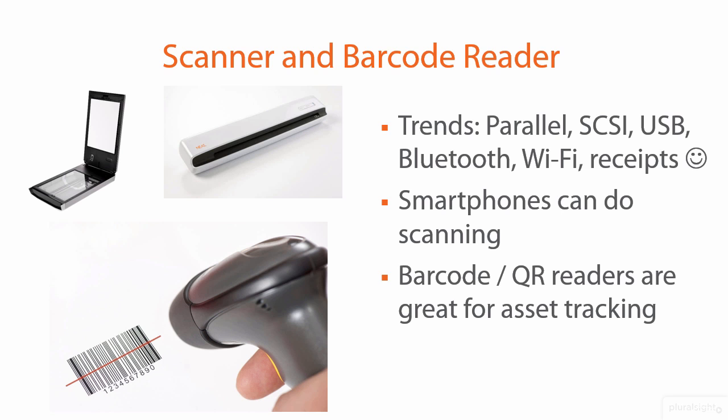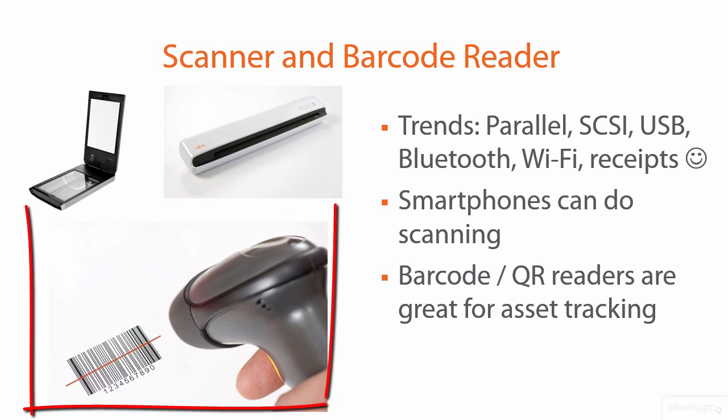Barcode and QR — quick response codes — readers are great for asset tracking in business. In my work as a systems administrator, I'm a big fan of keeping track of inventory data in a centralized way. I would associate a barcode with a particular asset, stick it on the device, and if I ever need to check the device in or out, I can use a USB or Bluetooth connected barcode reader to scan the code.